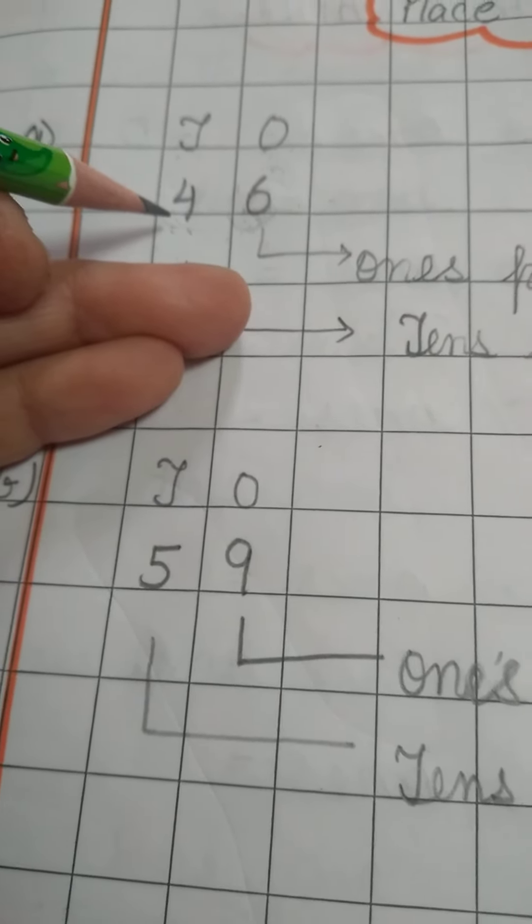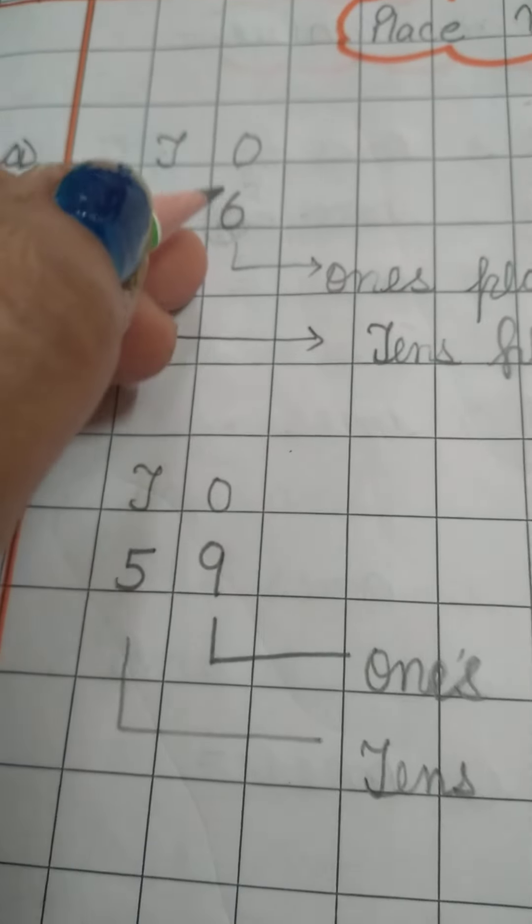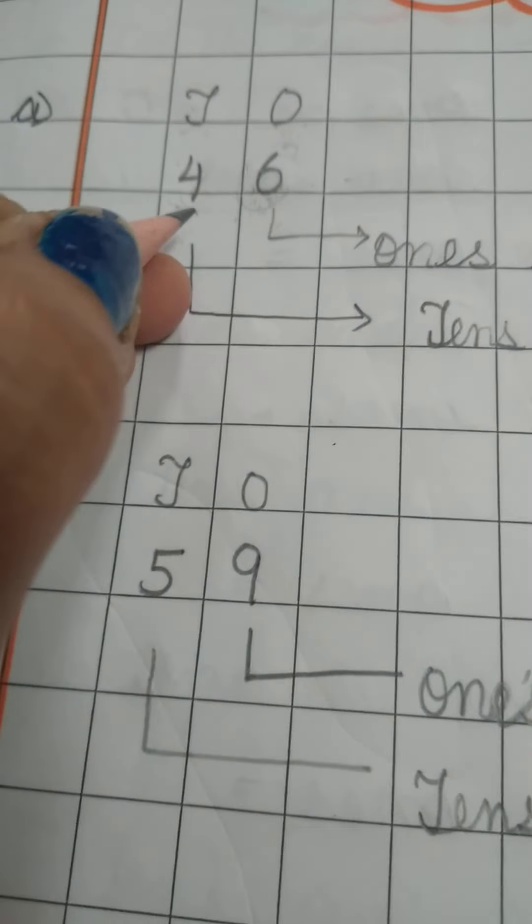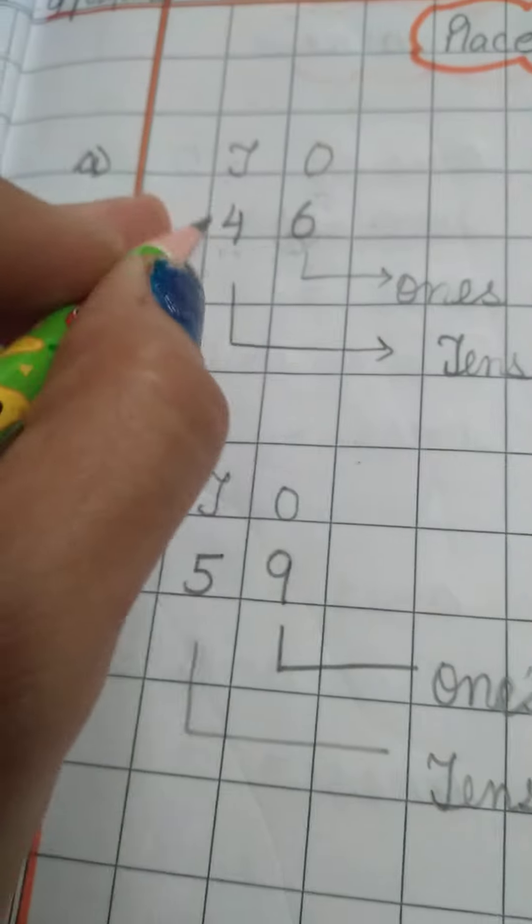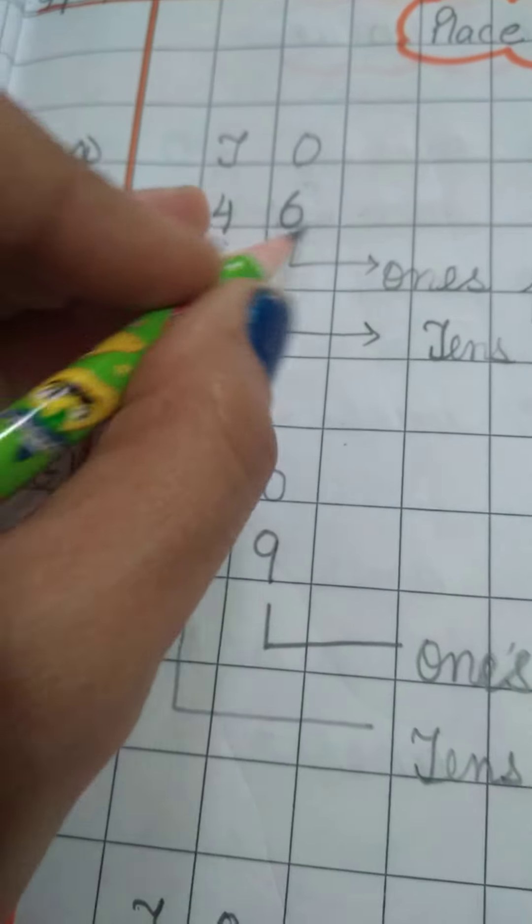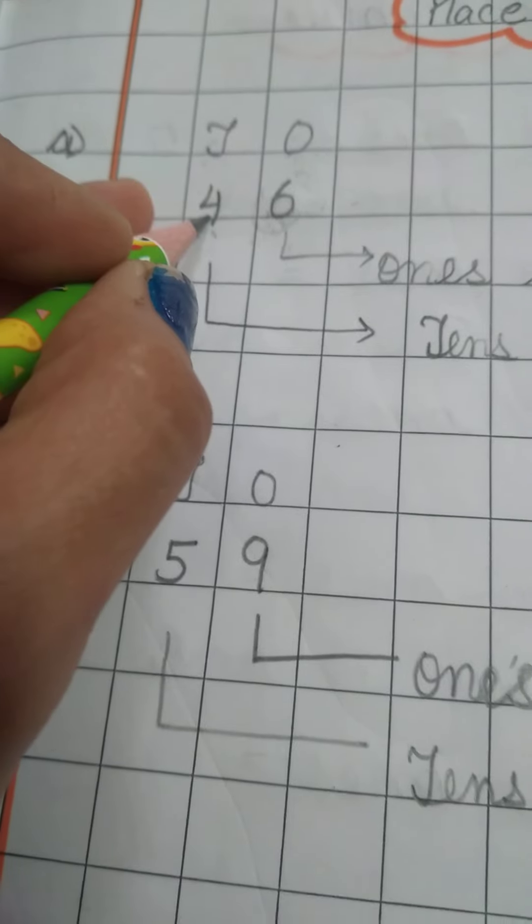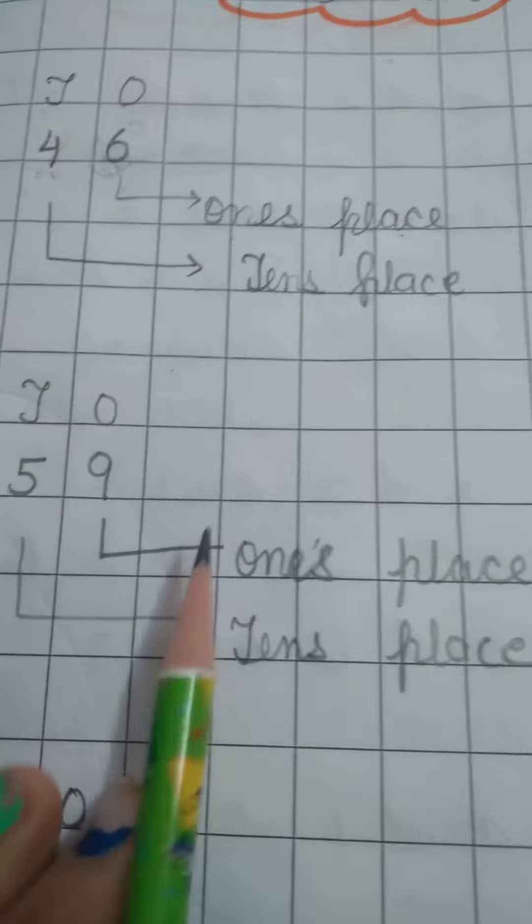Once again I am repeating: if I ask what is the place of 6, you will say ones. And if I ask what is the place of 4 in this number, you will say tens. The 6 is on ones place, 4 is on tens place. One more example.